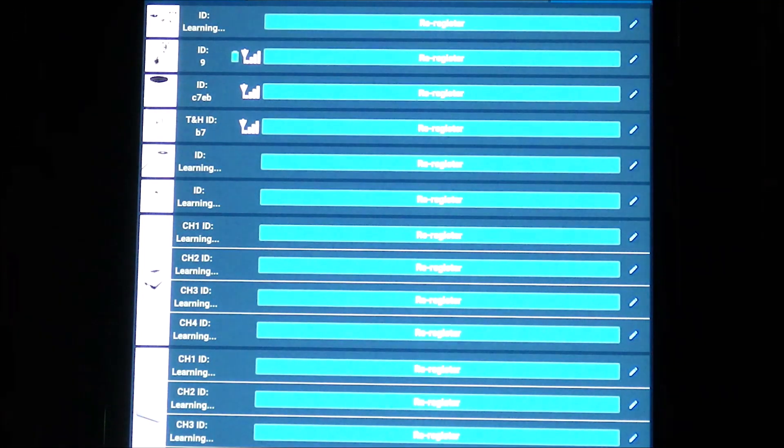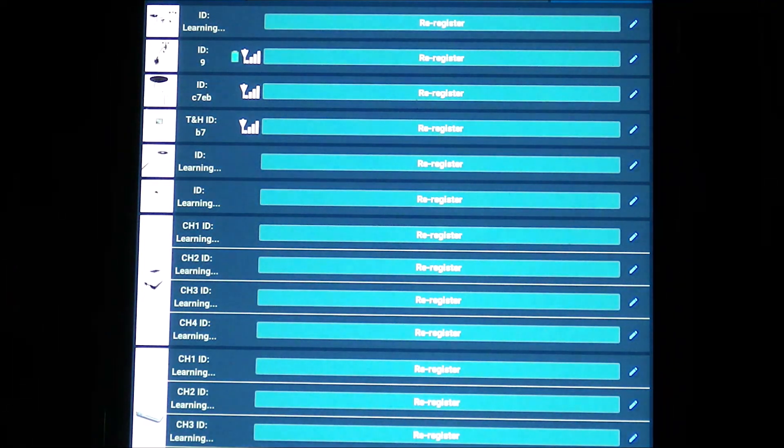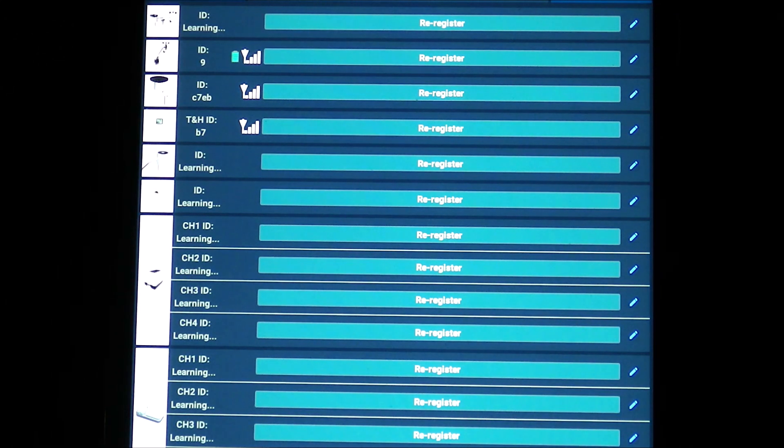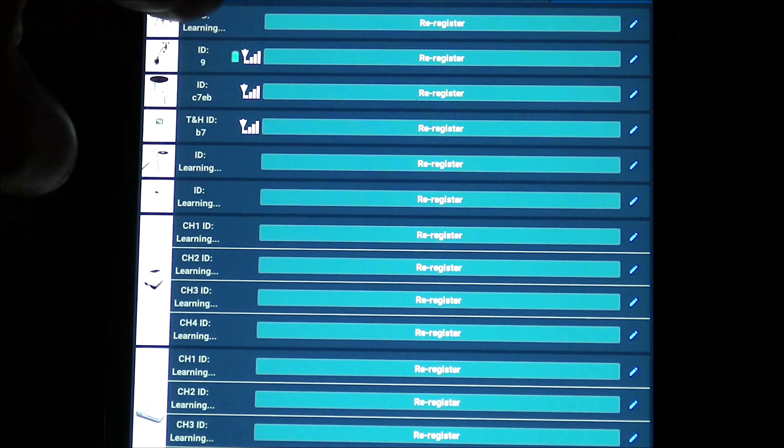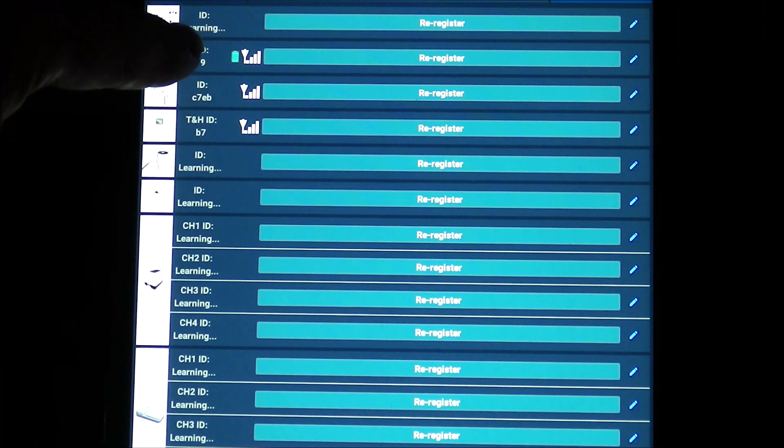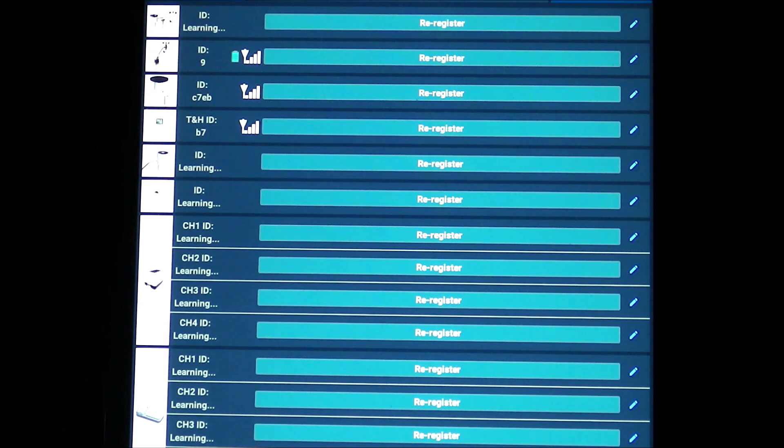If you hit the sensors ID, it'll give you information about all the sensors it's currently detecting. Down the side, you've got the radio signal which is high for all of them and the battery level, which is showing for the anemometer.